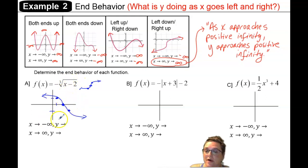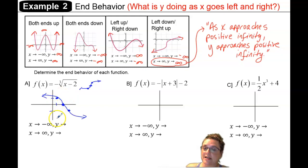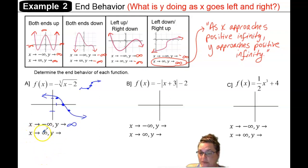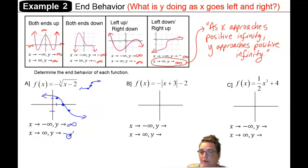Looking at the end behavior of this function: as x approaches negative infinity, we're headed to the left — the left end is headed up, so y is approaching positive infinity. As x approaches positive infinity, we're looking at the right end, and we see it is headed down, so y is approaching negative infinity.